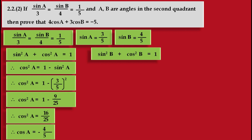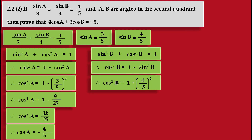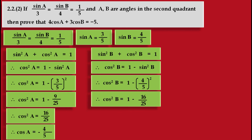Now we use the same identity for angle B: sin² B plus cos² B is equal to 1. We know the value of sin B, so we shift sin² B to the right hand side and get cos² B is equal to 1 minus sin² B. Substituting the value of sin B, which is 4 upon 5, we get cos² B is equal to 1 minus (4 upon 5) squared, which gives 1 minus 16 upon 25, so cos² B is equal to 9 upon 25.